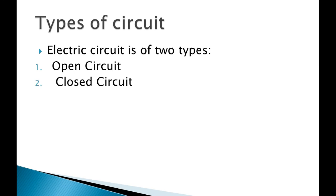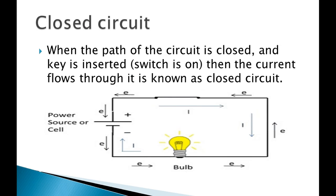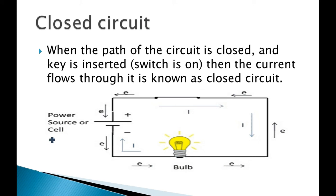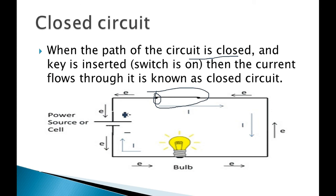We have two types of circuits: an open circuit and a closed circuit. The first one is a closed circuit. When the path of the circuit is closed — meaning wires are connected to the battery and cell — and you close the key, the switch is on.